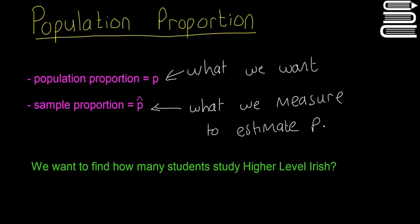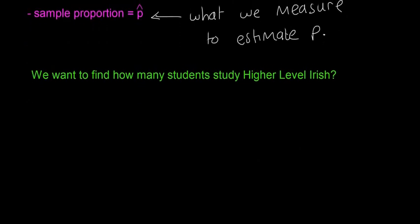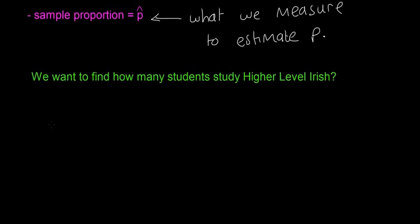Okay, so I'll go through the example and explain how those tie in. So this green example down here, we want to find out how many students study higher level Irish. So say for example we ask 500 students what they study, do they study higher level or lower level Irish. Alright, so for example, 155 say they study higher level Irish.